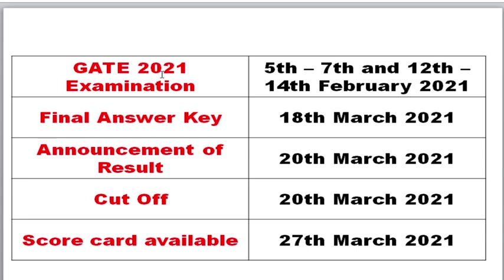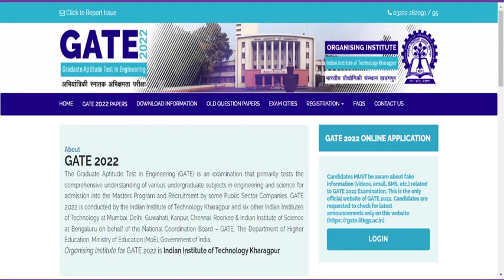For comparison, in GATE 2021 — last year's exam — the exam was also conducted in February. After the challenging period, they released the result on March 20th, and the final answer key was released on March 18th — only two to three days before the actual result date.